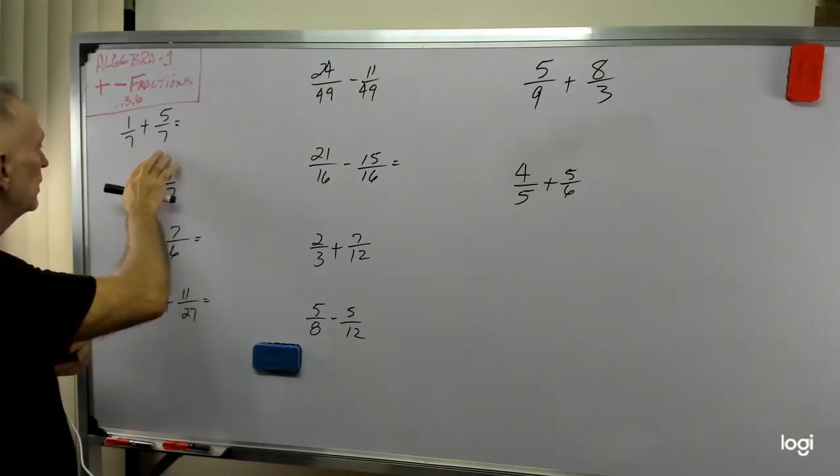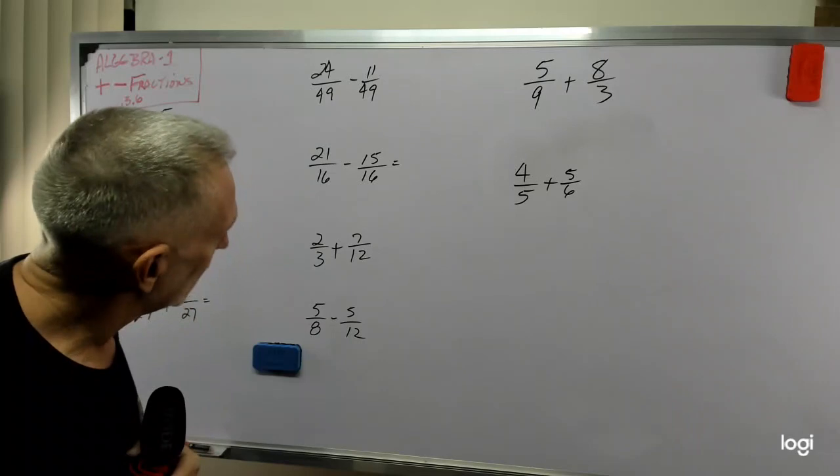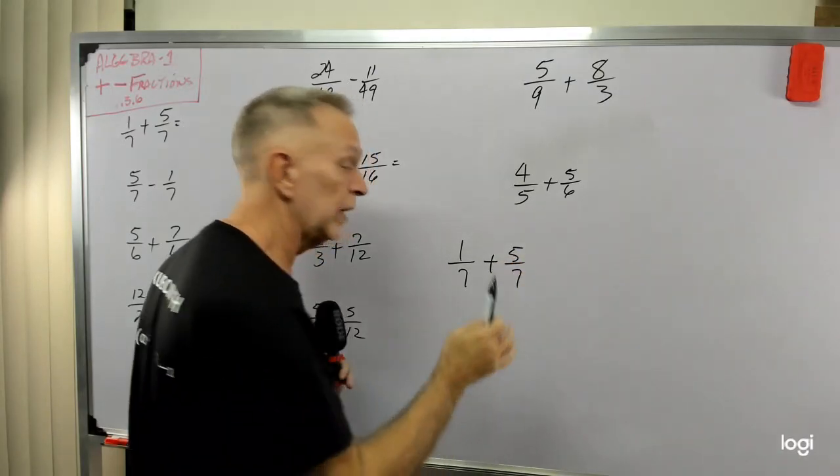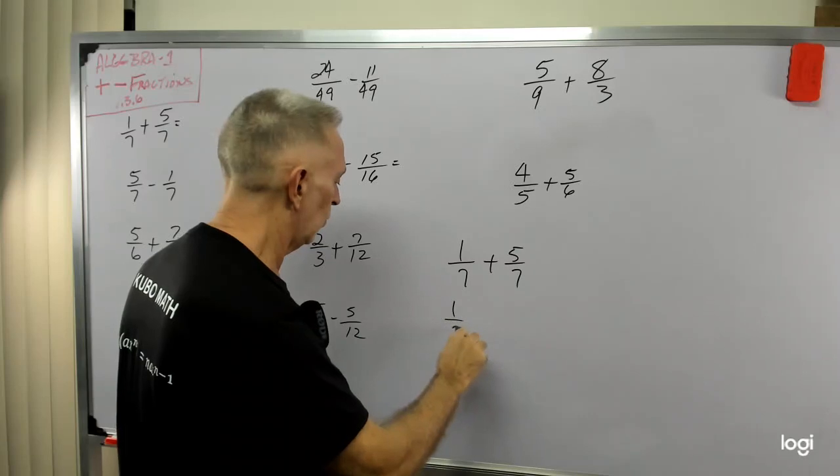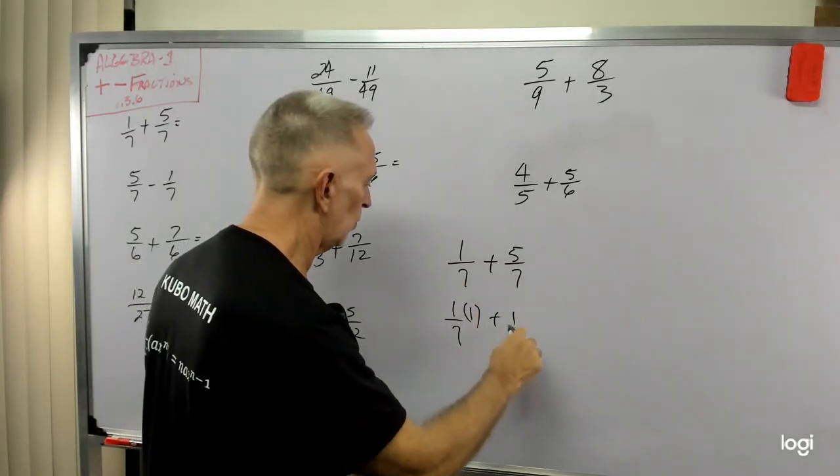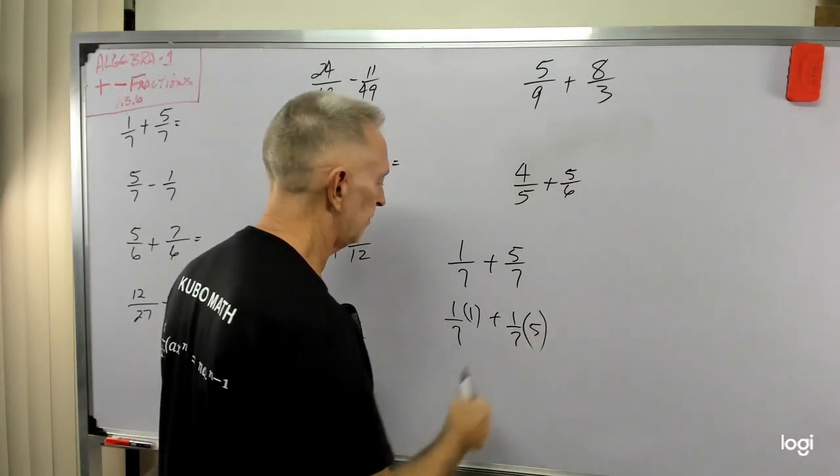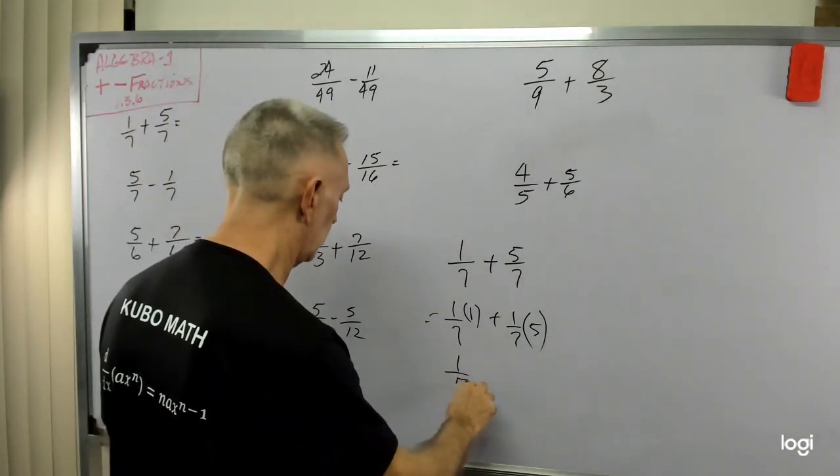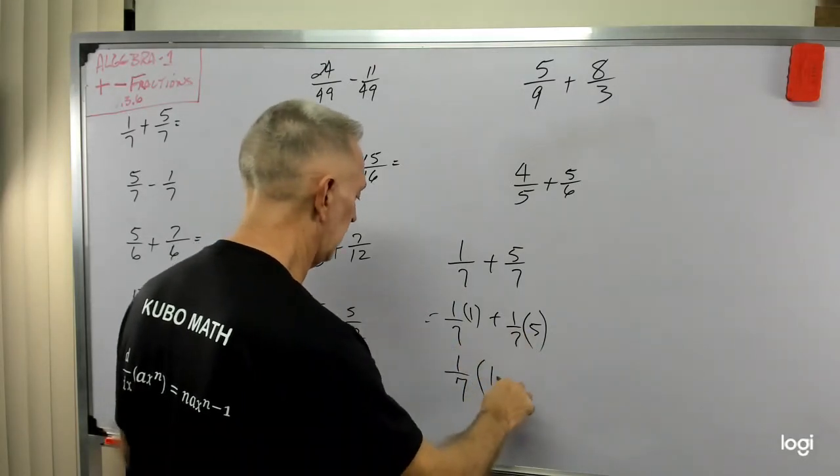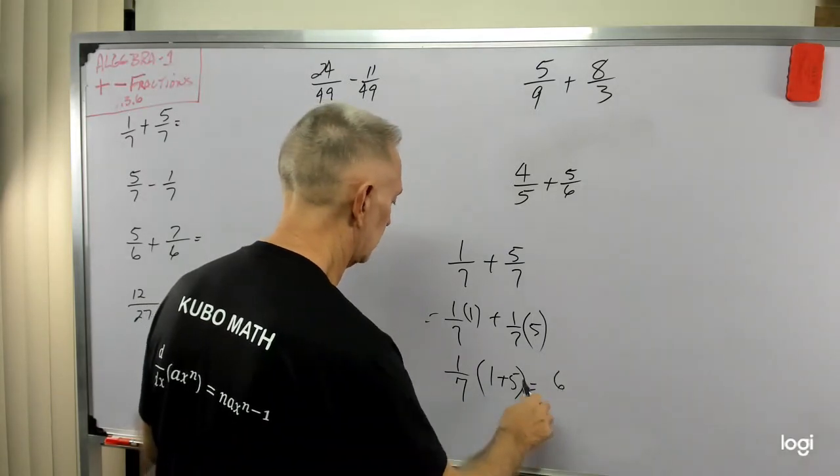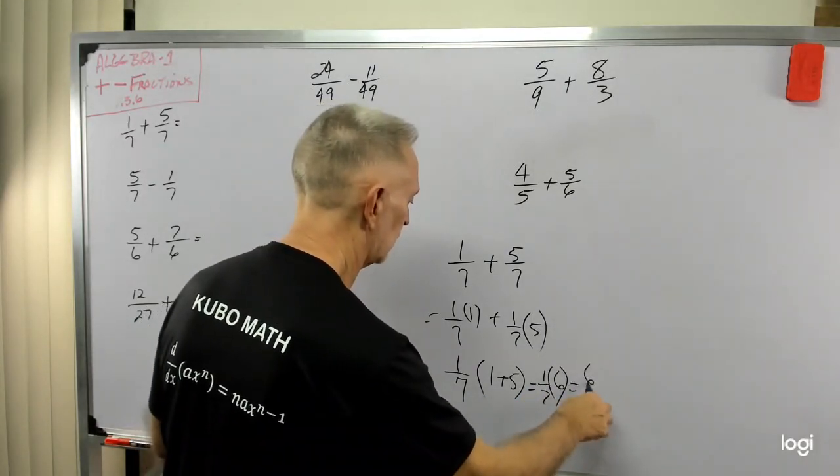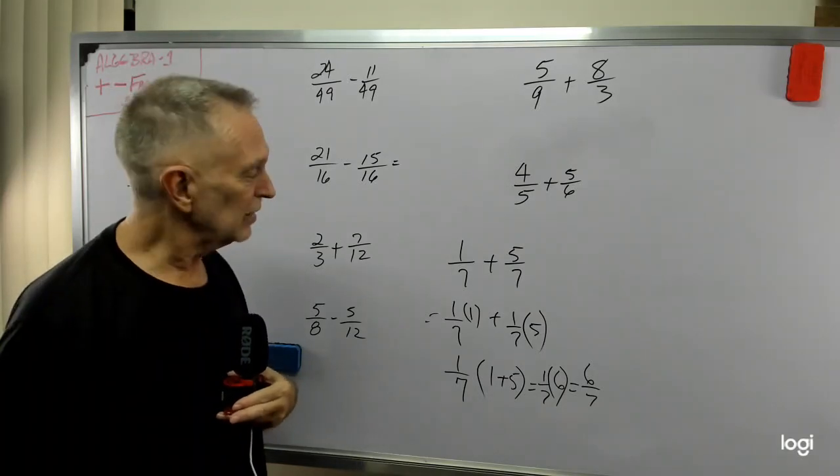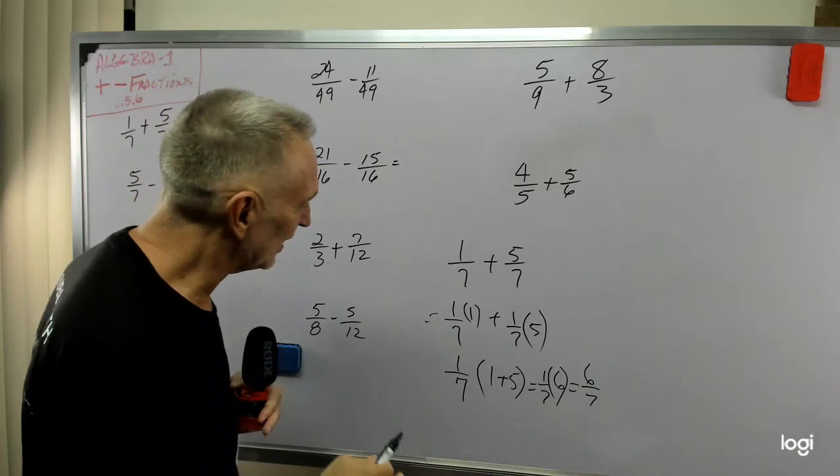Let's look at this fraction here: 1 over 7 plus 5 over 7. I'll use this as my workspace. We could say that is 1/7 times 1 plus 1/7 times 5. Then we could factor out the 1/7, so that's 1/7 times (1 plus 5). 1 plus 5 is 6, and that's 6 times 1/7, which is 6 over 7. That seems like reaching around the back of your head to scratch your elbow.